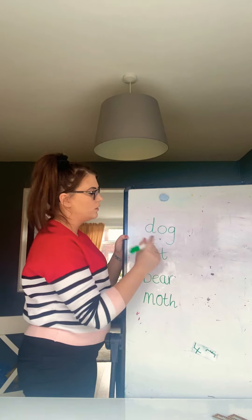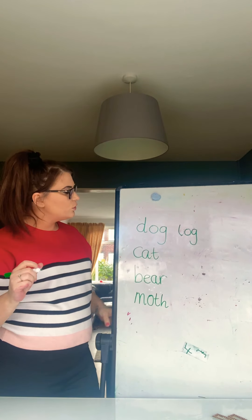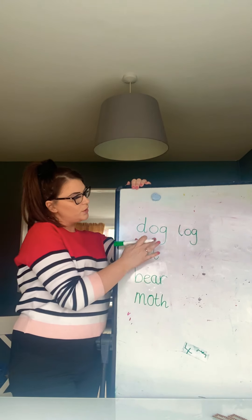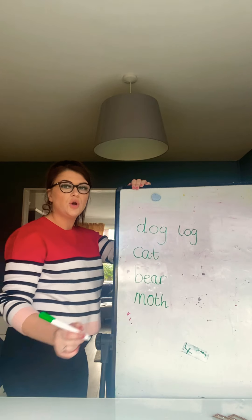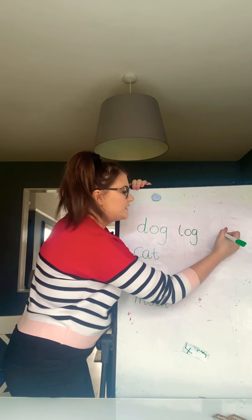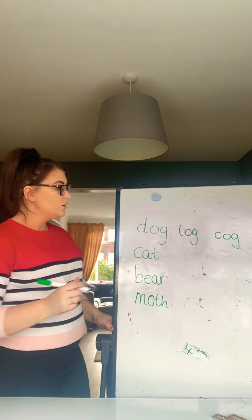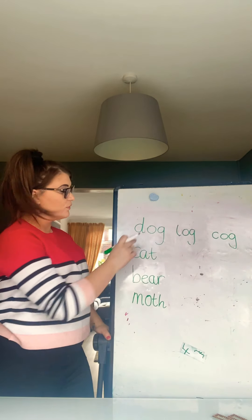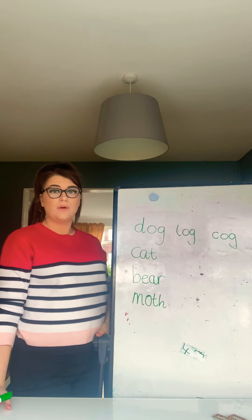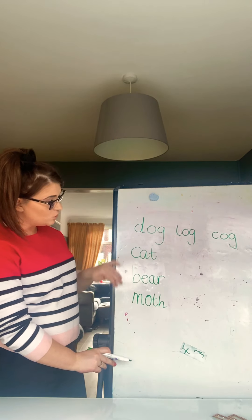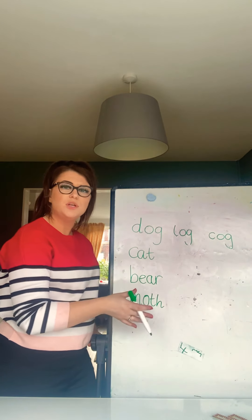Log. Dog. L-O-G. Log. Can you think of another one that rhymes with dog and log? I've got dog, L-O-G. Have a little think — I thought of one: cog. C-O-G. Cog. Fabulous! So I want you to keep going with that and see how many different rhyming words you can write that rhyme with dog. Do the same for cat, bear, moth, and all of the other animals in the story if you can. Challenge yourself, and make sure you're practising your letter formation nice and beautiful as you write.